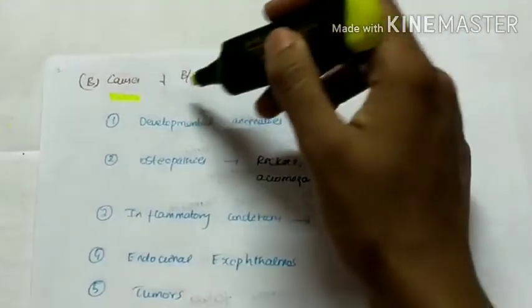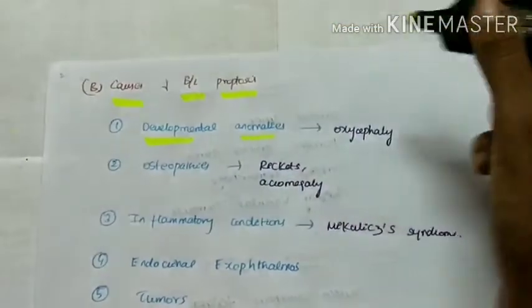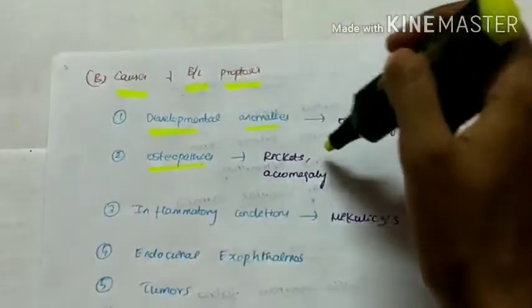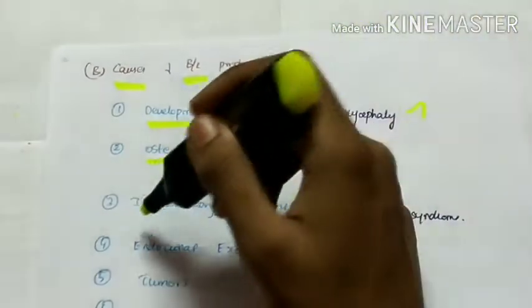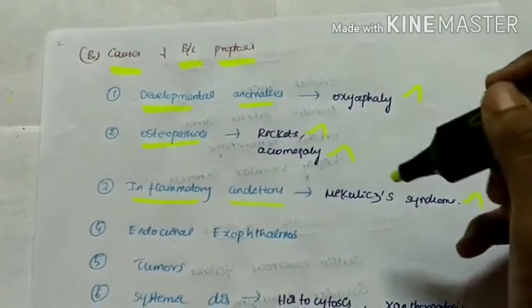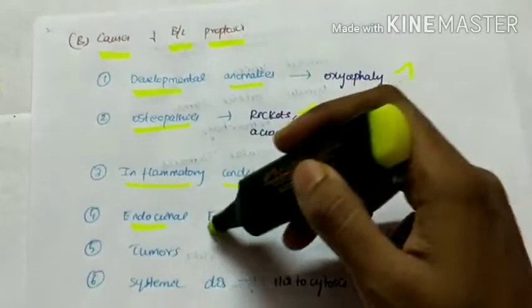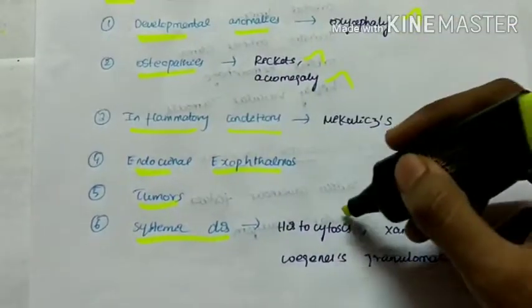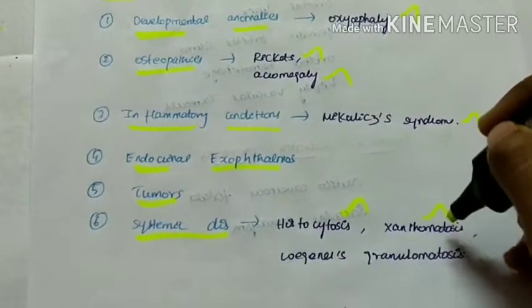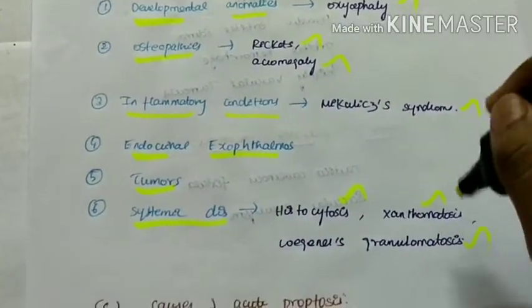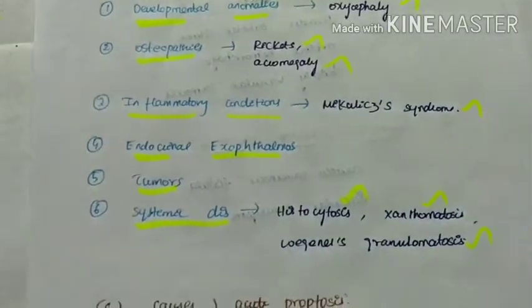Causes of bilateral proptosis include developmental anomalies like oxycephaly, osteopathies like rickets and acromegaly, inflammatory conditions including syndromes like Mikulicz's syndrome, endocrine exophthalmos, tumours, and systemic diseases like histiocytosis, xanthomatosis, and Wegener's granulomatosis.